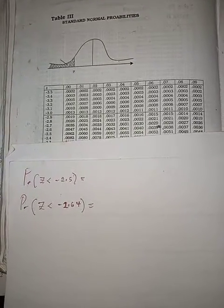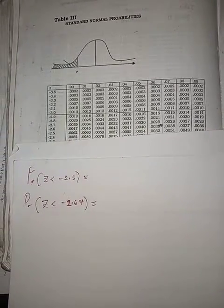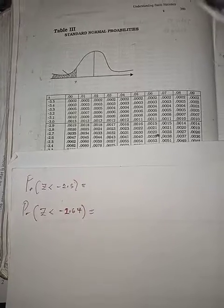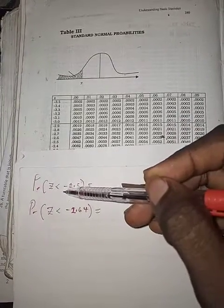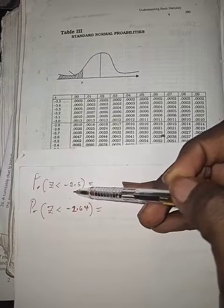Hello guys, concerning the probability of z-score, if you're trying to find the probability when your z-score is to the left of the value minus 2.5